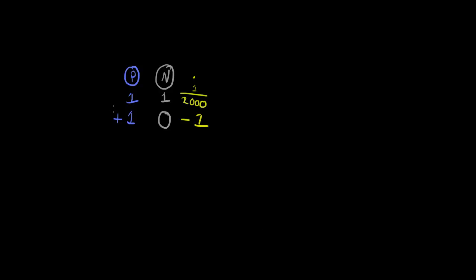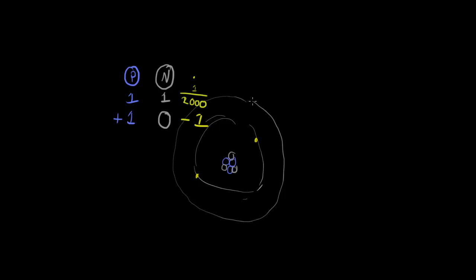If I draw that model again now with the protons inside the nucleus and the neutrons also inside the nucleus, with an energy level and electrons surrounding it — since we have three protons and this is an atom I'm going to draw another shell with one electron in it — because atoms have an equal number of protons and electrons.